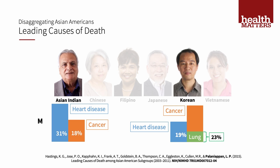Looking at leading causes of death in six major Asian subgroups disaggregated on death records: for most Asian subgroups, cancer is the leading cause of death. However, for some groups, heart disease is the major cause, varying widely across groups. For example, one out of three Asian Indian males die of heart disease and only one out of five of cancer — exactly the opposite of the Korean male, where one out of five die of heart disease and one out of three die of cancer. Lung cancer is an important cause of death for Korean American men, possibly related to high rates of smoking.